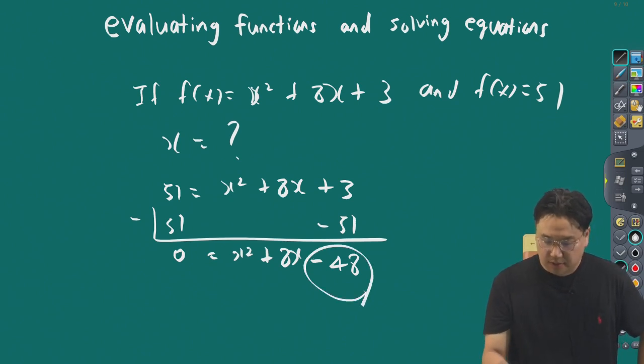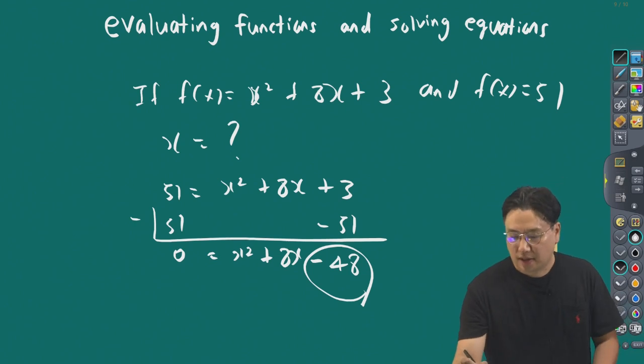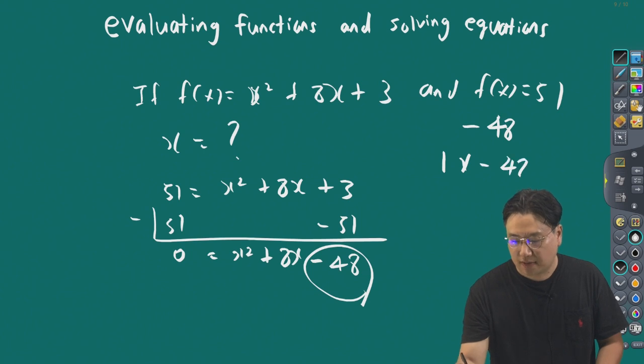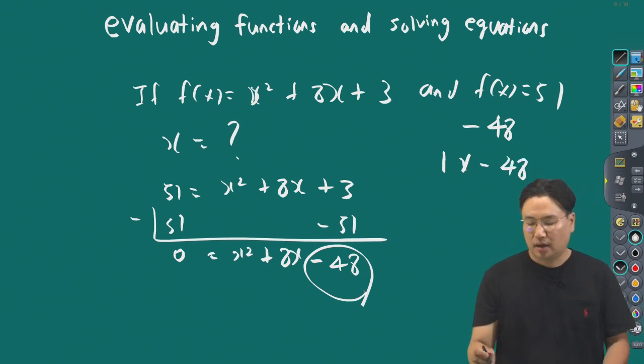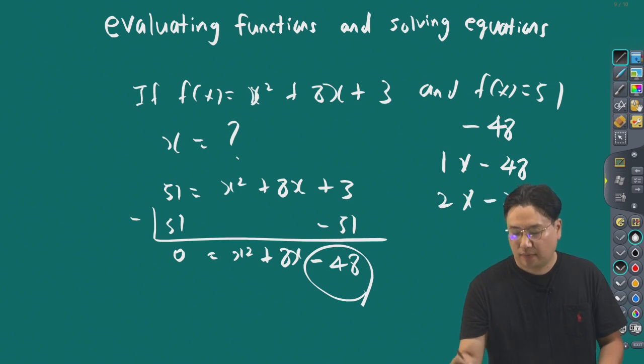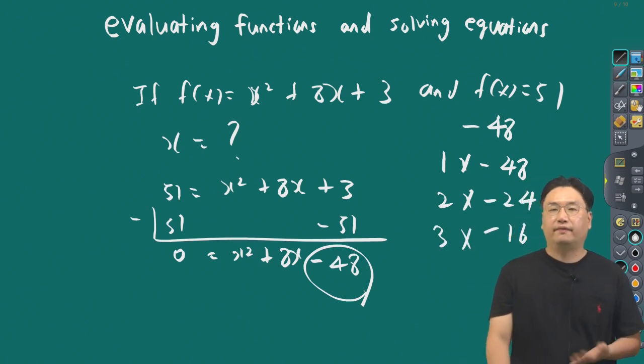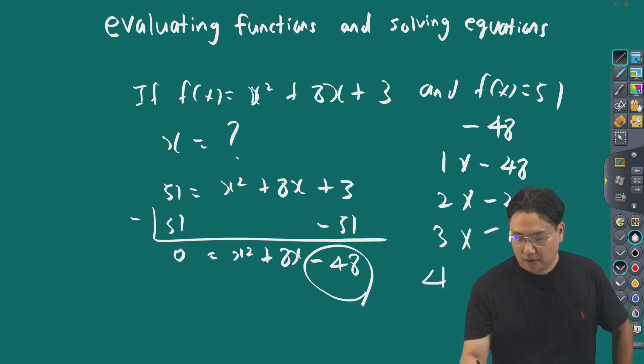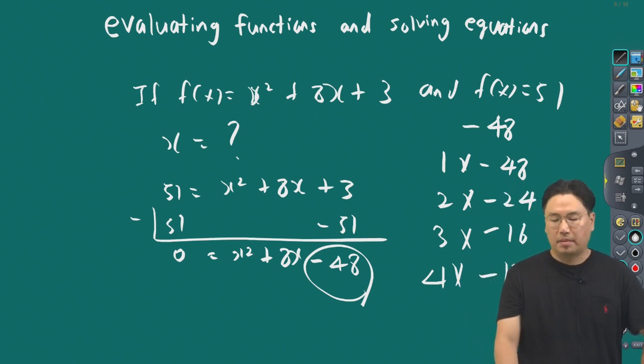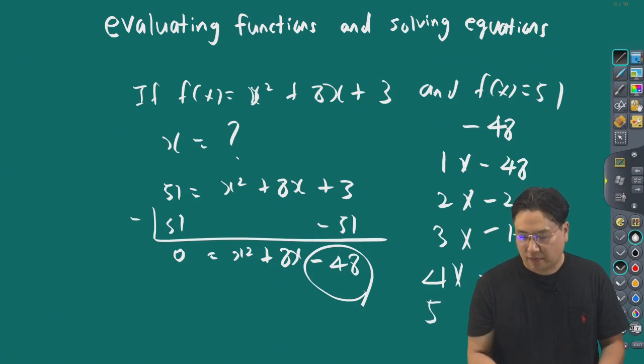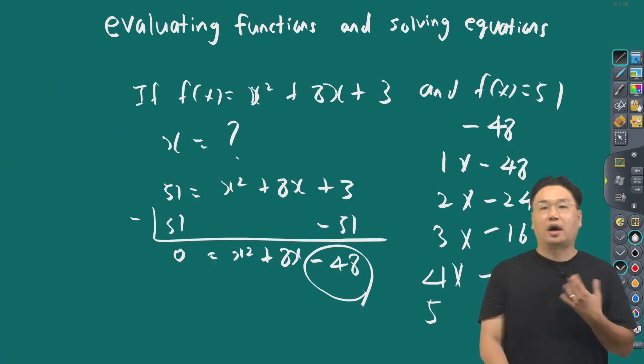We're going to find factors of negative 48 using division. 1 times minus 48 is minus 48. 2 times negative 24 is minus 48. 3 times minus 16 is minus 48. 4 times minus 12 is minus 48. We can't use 5 because dividing minus 48 by 5 doesn't give a whole number. 5 times 9 is 45, 5 times 10 is 50.